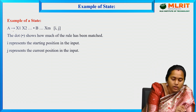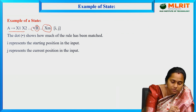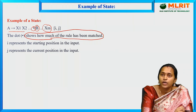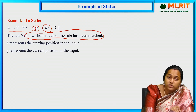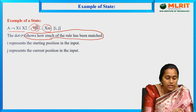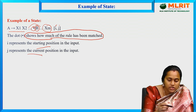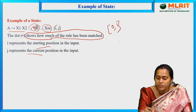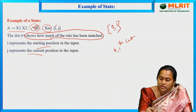Consider a rule of the form A → x1 x2 ... xm with a dot symbol indicating how much of the rule has been matched to x1, x2, and so on up to xm. Here, i represents the starting position and j represents the current position. For example, starting position is 0 and current position is 1. Taking the word 'the cat' - 'the' is at position 0, and the next position is 1.